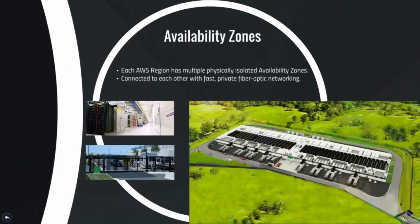Each region is divided into at least two availability zones that are physically isolated from each other. This provides business continuity for your infrastructure if you have it distributed across multiple availability zones — if one availability zone goes down, the infrastructure in the other will continue to operate. The largest region, US East North Virginia, has six availability zones, and they are connected to each other through a high-speed fiber optic network.